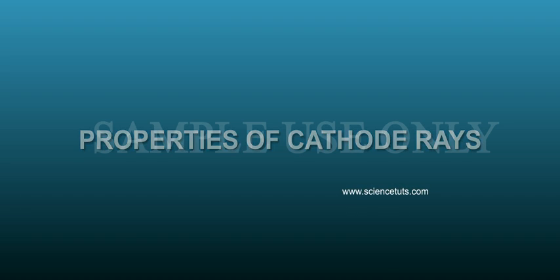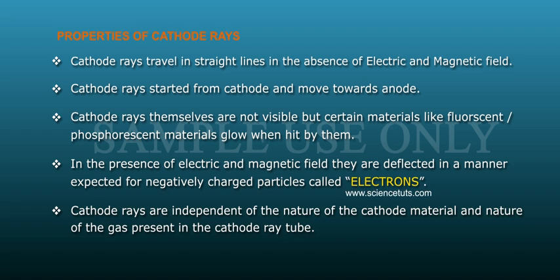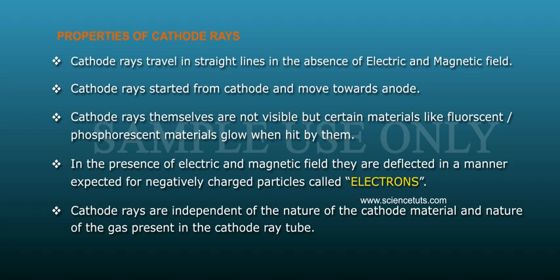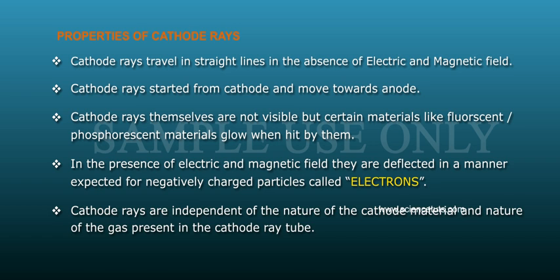Properties of cathode rays: Cathode rays travel in a straight line in the absence of electric and magnetic fields. Cathode rays start from the cathode and move towards the anode. Cathode rays themselves are not visible, but certain materials glow when hit by them. In the presence of electric and magnetic fields, they are deflected in a manner expected for negatively charged particles called electrons. Cathode rays are independent of the nature of the cathode material and the nature of the gas present in the cathode ray tube.